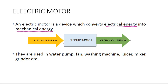In day-to-day life, water pump, fan, washing machine, mixer grinder — everything works on the principle of electric motor. Electric motors come in different varieties based on their power supply. DC power supply gives a DC motor; alternating current gives an AC motor.